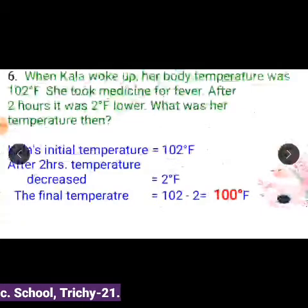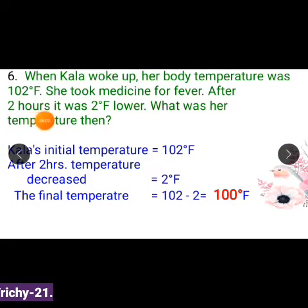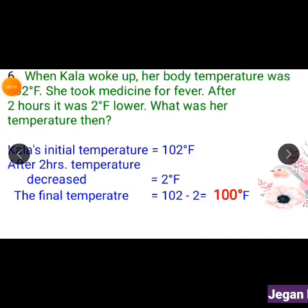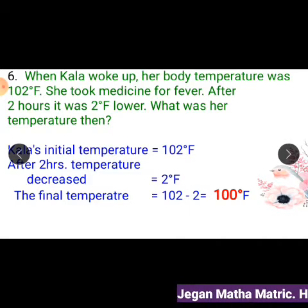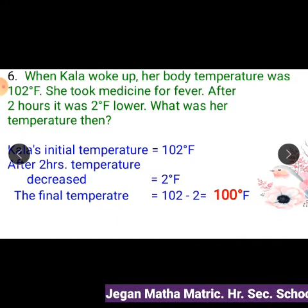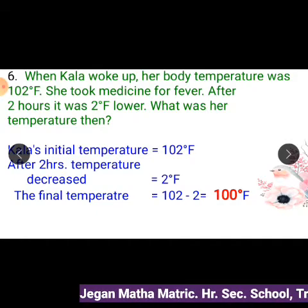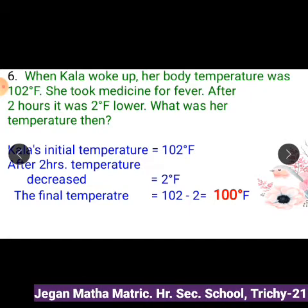Sixth sum: When Kala woke up, her body temperature was 102 degrees Fahrenheit. She took medicine for fever. After 2 hours, it was 2 degrees Fahrenheit lower. What was her temperature? Kala's initial temperature is equal to 102 degrees Fahrenheit. She took medicine for fever, so the body temperature decreased by 2 degrees Fahrenheit. After 2 hours, the final temperature equals 102 minus 2 equals 100 degrees Fahrenheit.